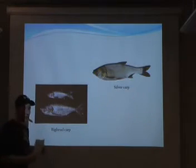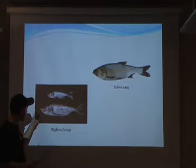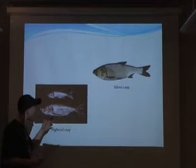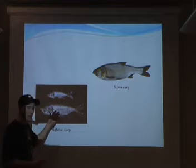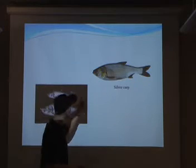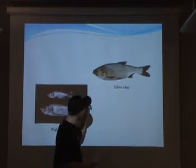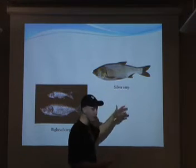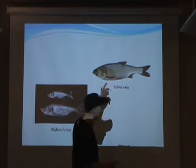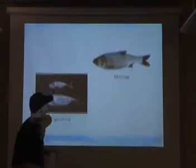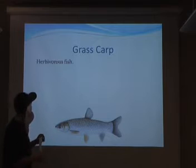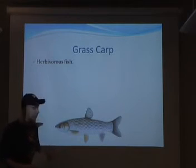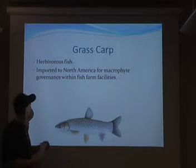Bighead carp are characterized by eyes slightly below their mouth, a slightly blackish head, and a silvery blackish splotchy body pattern. Silver carp similarly have eyes below their mouth, more of a greenish head, and a greenish-silver body with greenish fins.